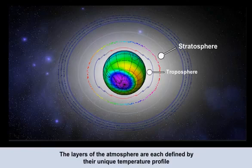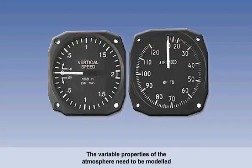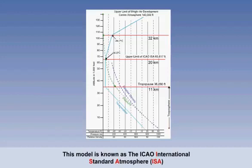Within these two layers we have many properties which are important to us, like density, pressure, and temperature. However, our atmosphere is so very variable from day to day that it's been necessary to construct a model atmosphere to help in calibration of instruments and aircraft testing. This model atmosphere is known as the ICAO International Standard Atmosphere, or ISA. The model extends to 32 kilometres, which is about 105,000 feet above mean sea level.